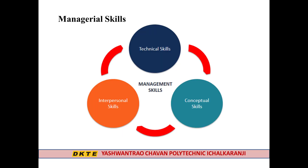The levels of management are 3 levels: top management, middle management, and lower level management. These are 3 levels — top level management, middle level management, and lower level management. We are going to study every management level.